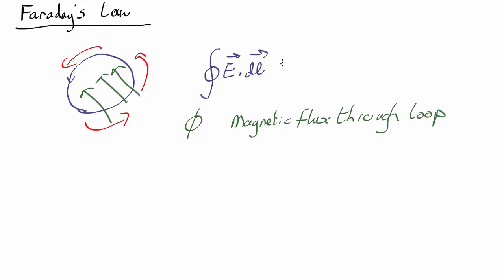So what we have is the line integral of the electric field, which is a measure of how much curly electric field there is, is equal to the rate of change of this magnetic flux through that loop.